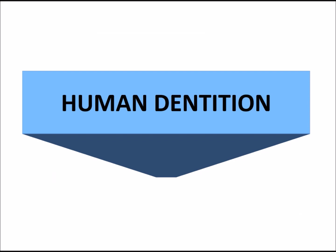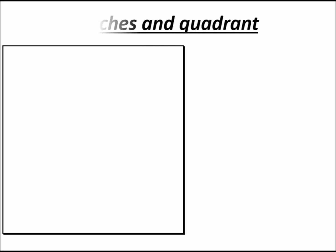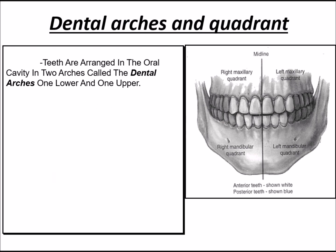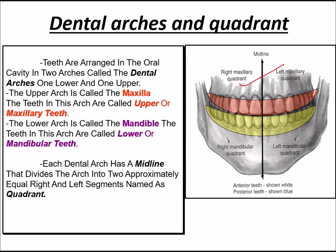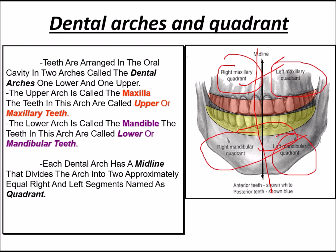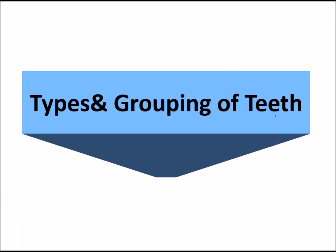The human jaw contains dental arches and quadrants. We have two arches — the maxillary arch and mandibular arch — and four quadrants. A midline divides the jaw into the right maxillary quadrant, left maxillary quadrant, right mandibular quadrant, and left mandibular quadrant. Each dental arch has a midline that divides it into two approximately equal right and left segments known as quadrants.